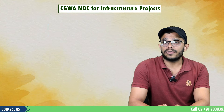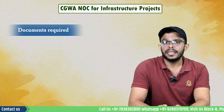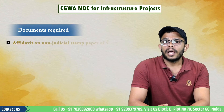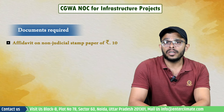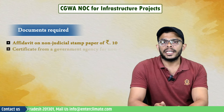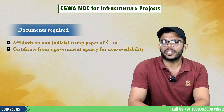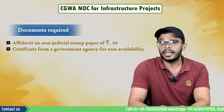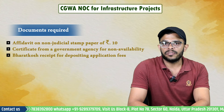The required documents for obtaining CGWA NOC for infrastructure projects depend on the quantity of groundwater abstracted. Key documents include an affidavit on non-judicial stamp paper of rupees 10 confirming the non- or inadequate availability of public water supply, a certificate from the government agency for non-availability or inadequate availability of treated sewage water for construction within a 10 km radius of the site, and the Bharat Kosh receipt for depositing the application fees.